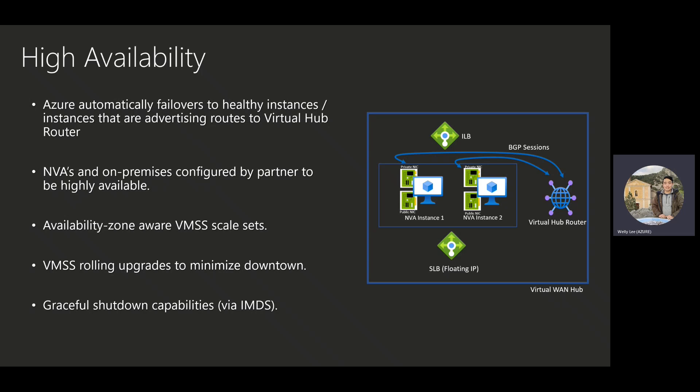Now I wanted to go into a little bit more detail on the other north stars. The first is high availability. Because of the ILB that's constantly probing the NVA for its health status, Azure automatically fails over to healthy instances — instances that are advertising routes to the virtual hub router. If an instance withdraws its routes or is no longer healthy, we simply won't send traffic to that instance, meaning customer traffic is always serviced by healthy functional instances. The NVAs and on-premises devices are also configured by the partner to be highly available. Our VM scale sets are deployed as availability-zone-aware scale sets and undergo a process called rolling upgrades, which ensures we will never take an instance down for maintenance unless there are sufficient healthy instances left over to serve customer traffic. We also offer the ability for NVAs to query IMDS — the metadata service — for upcoming events so that the NVA can initiate a graceful shutdown sequence to minimize interruption to customer traffic.